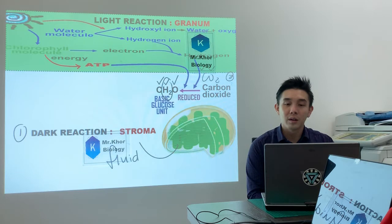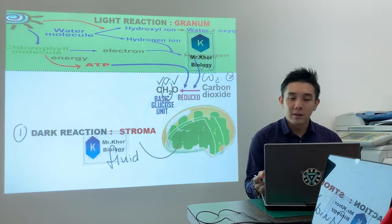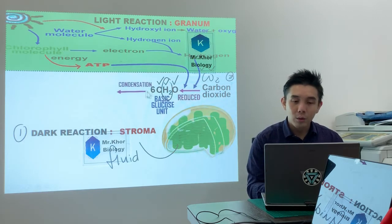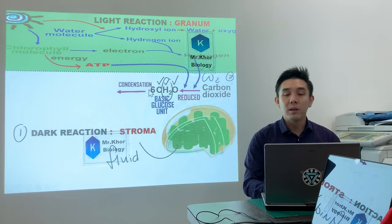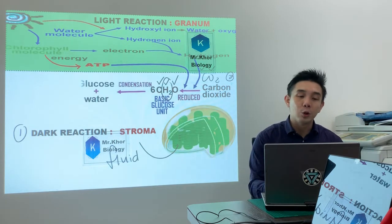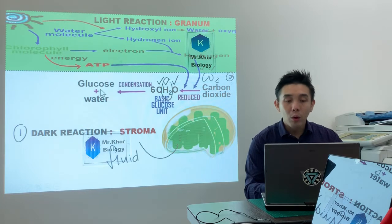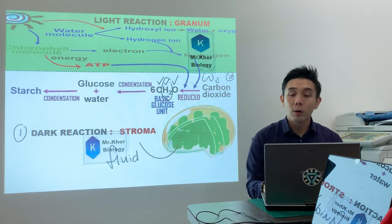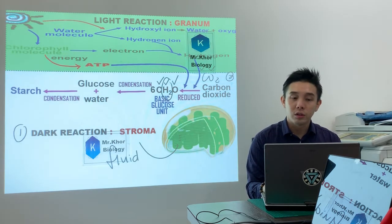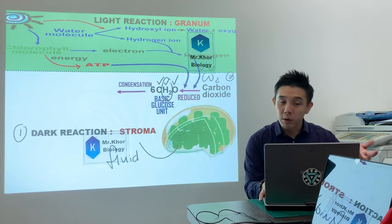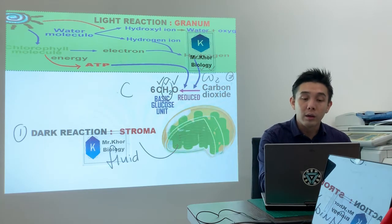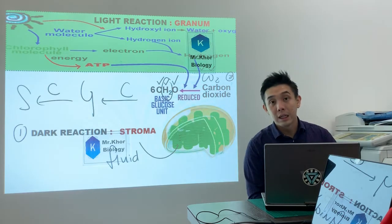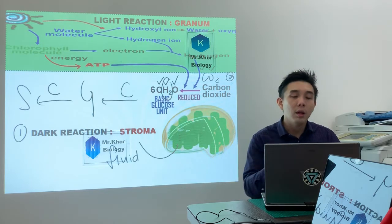From here on it's very simple. Basic glucose units will undergo condensation - means many of these units join together to form glucose in order to form starch. So if I will use this is how I memorize: after I reach basic glucose unit, condensation, glucose, condensation, starch. Revision done.